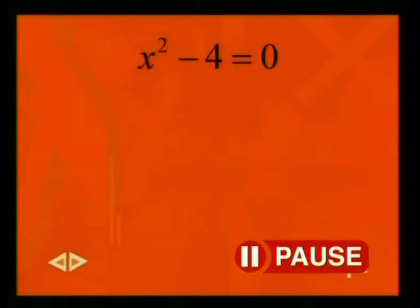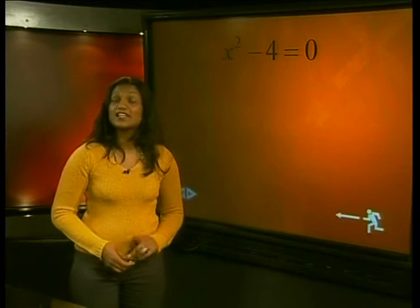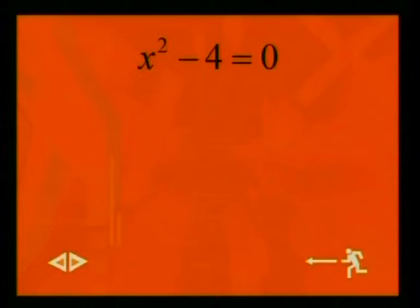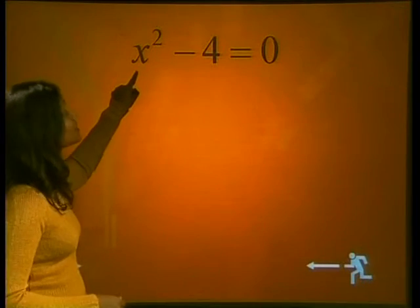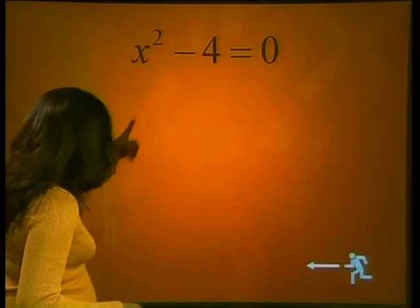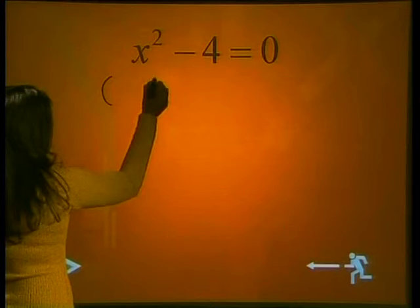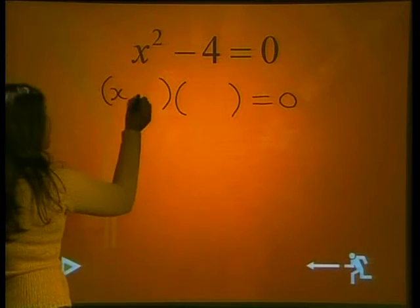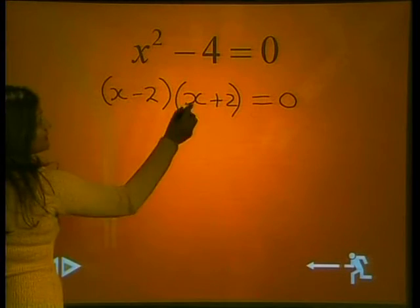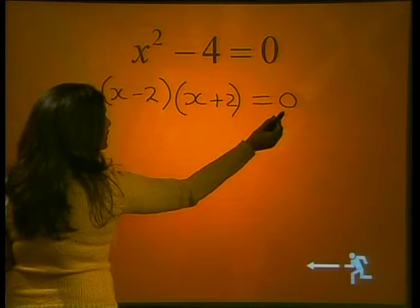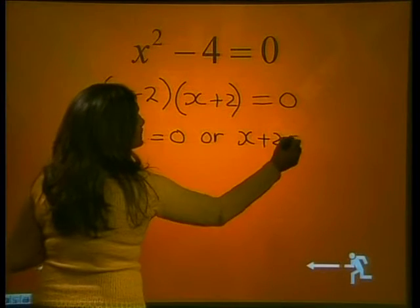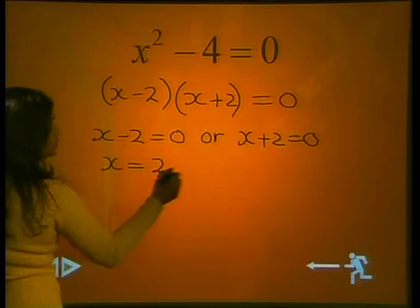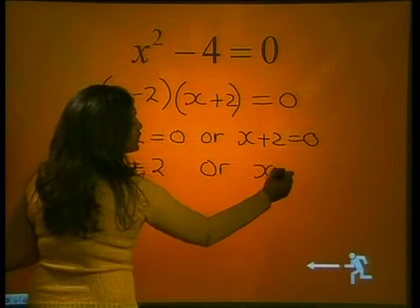Next equation: x squared minus 4 is equal to 0. This is a quadratic equation but it doesn't have a middle term. It is a difference of two squares — x squared is the square of x, and 4 can be written as 2 to the power of 2. So we can write the factors as two brackets: x minus 2 and x plus 2. Then x minus 2 equals 0 or x plus 2 equals 0, giving x equals 2 or x equals negative 2.